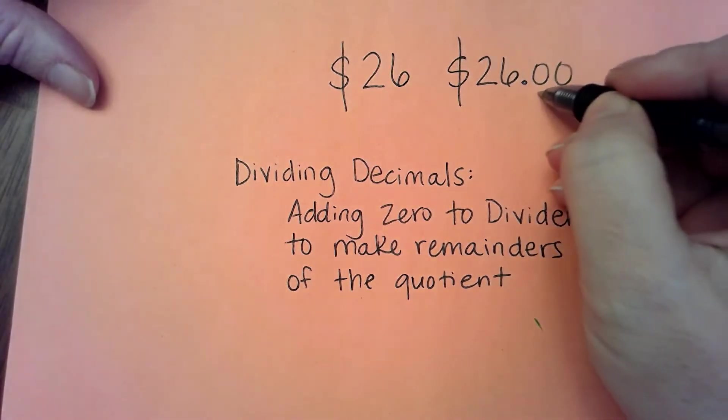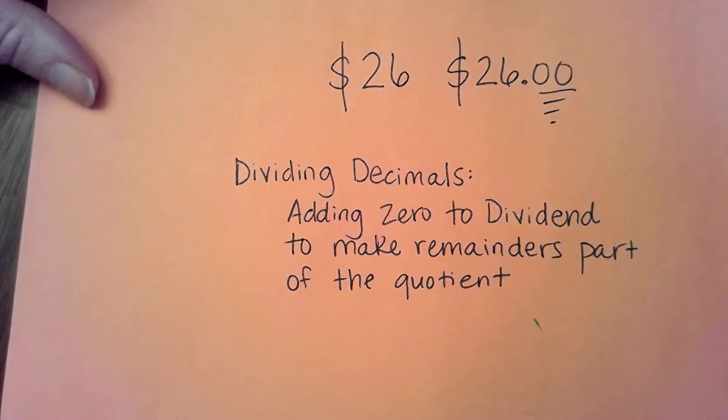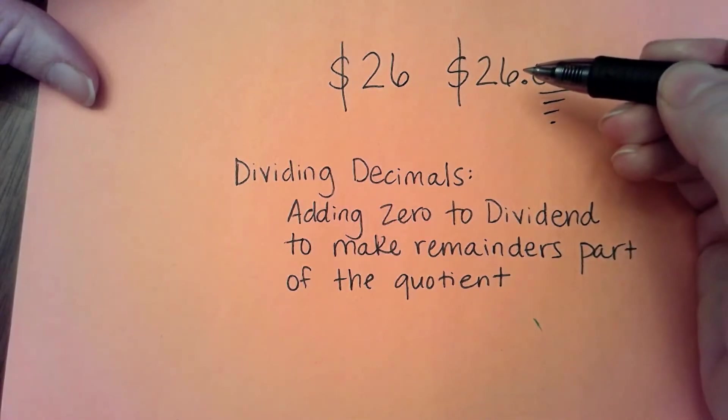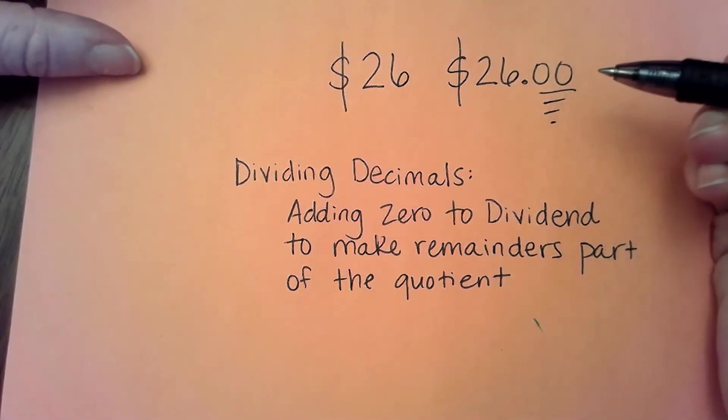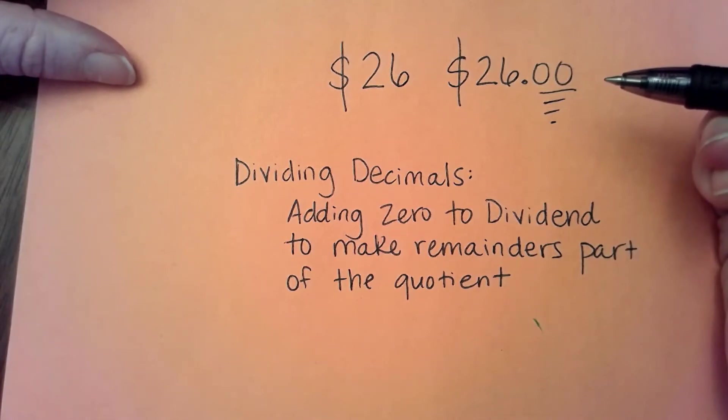So the first thing that you need to remind yourself of is that if you have zeros following a decimal point, they actually don't add any value. They just serve as placeholders.